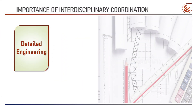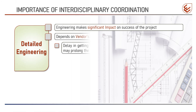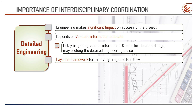Now let's see the importance of interdisciplinary coordination in the engineering phase. The cost of engineering in an EPC project constitutes a small percentage of the total cost, but engineering makes a significant impact on the success of the project. Detailed engineering depends on information from vendors, and one of the reasons for delay in completion of engineering is non-availability of correct information at the required time. Oil and gas projects are always multidisciplinary, so very close coordination is required between disciplines during the detailed design phase. Detailed engineering is the very first phase of execution and lays the framework for everything to follow.